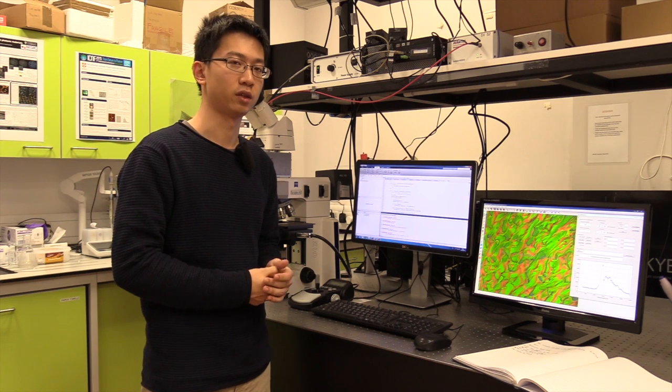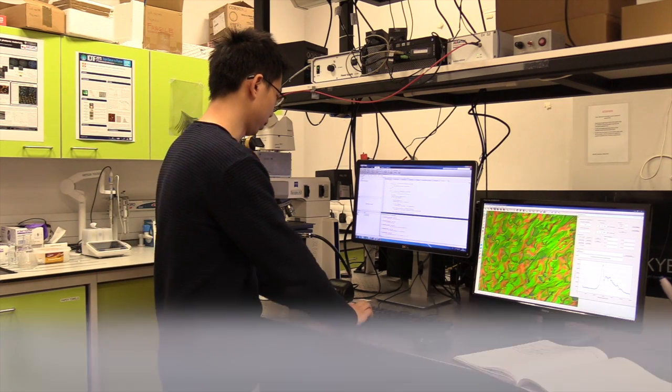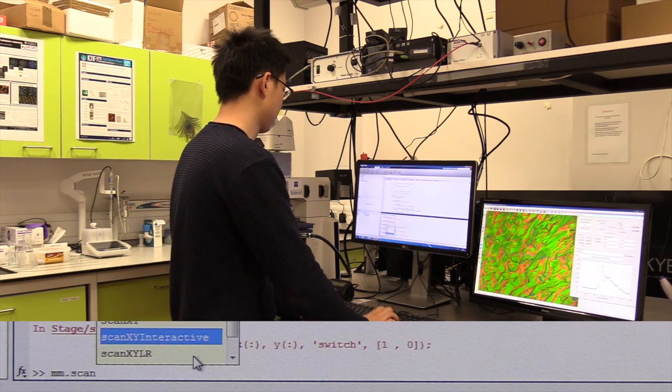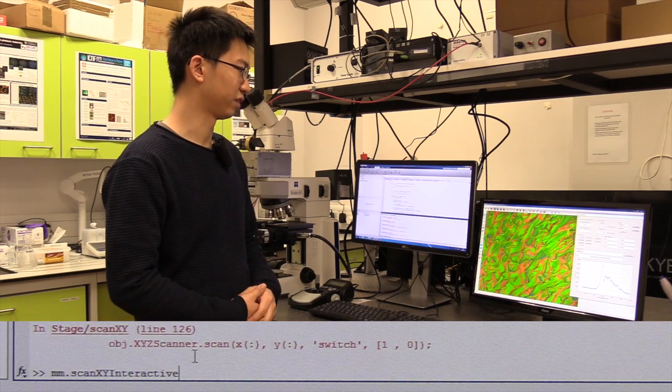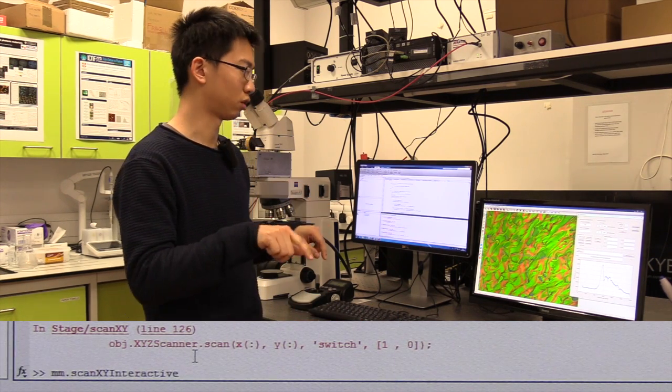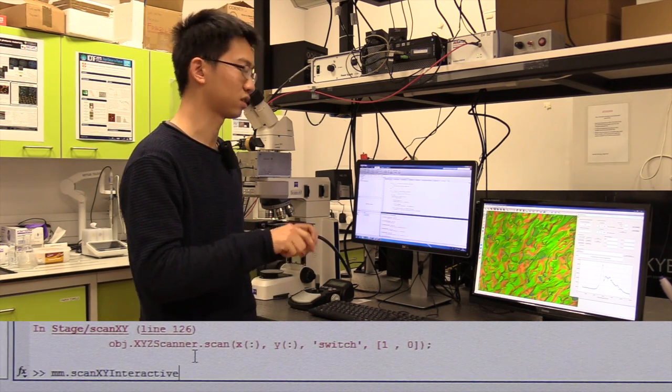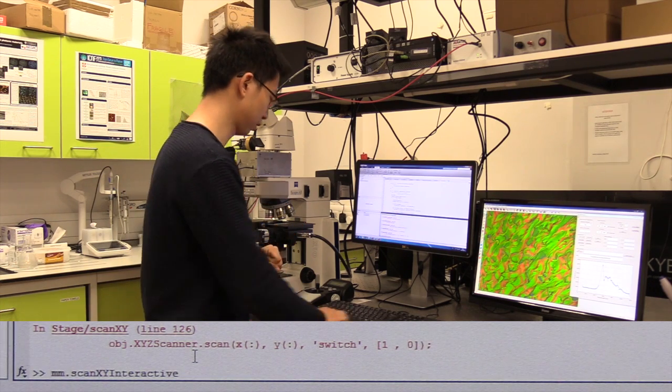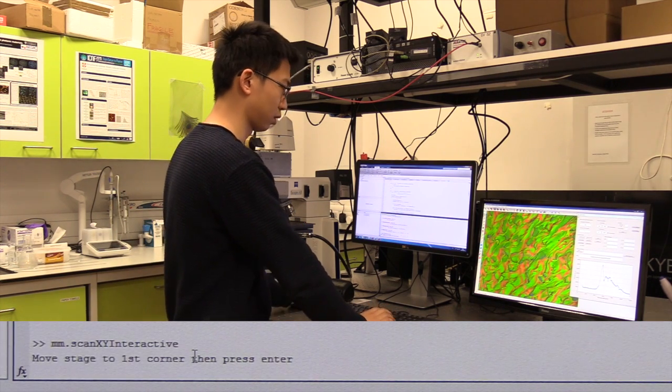Another very useful function is called scan XY interactive. As the name suggests, it allows you to scan interactively. That means you will be given a chance to define your region of interest and scan inside this region. For example, I want to scan a square around here.